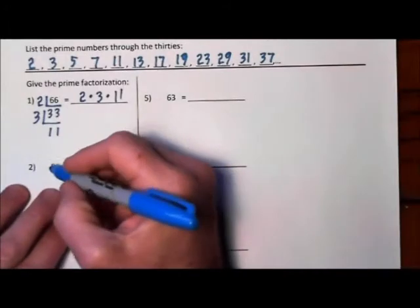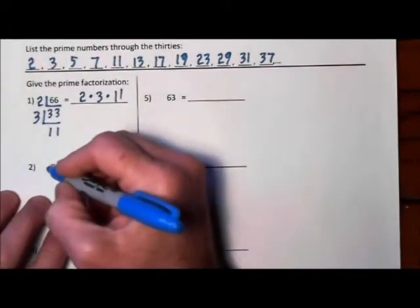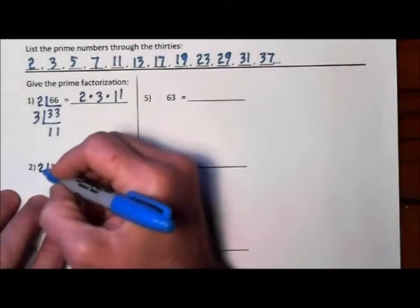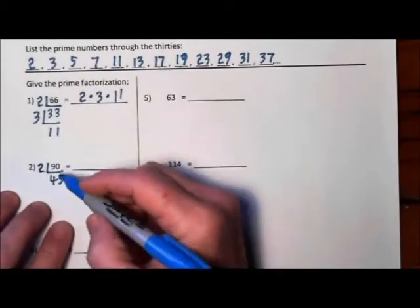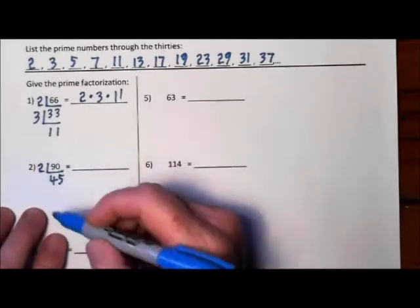For 90, will 2 go into 90? Yes. So we start with our 2. 2 goes into 90 45 times. You basically just have to cut it in half when 2 is going in.